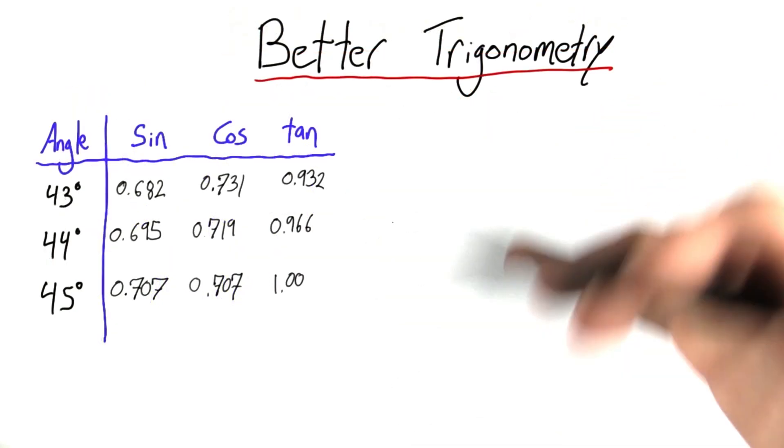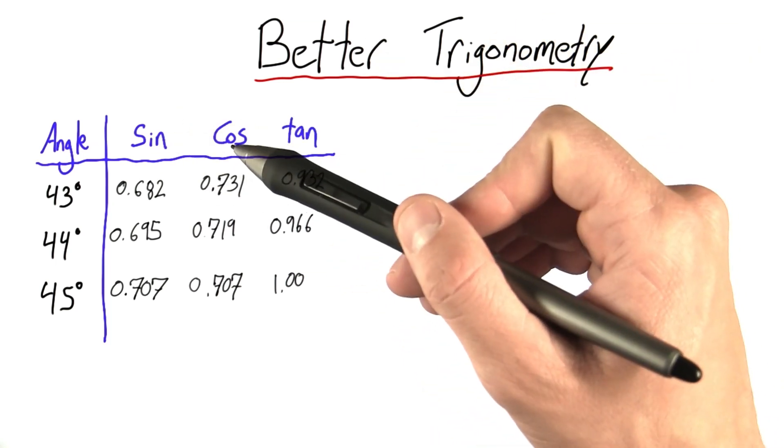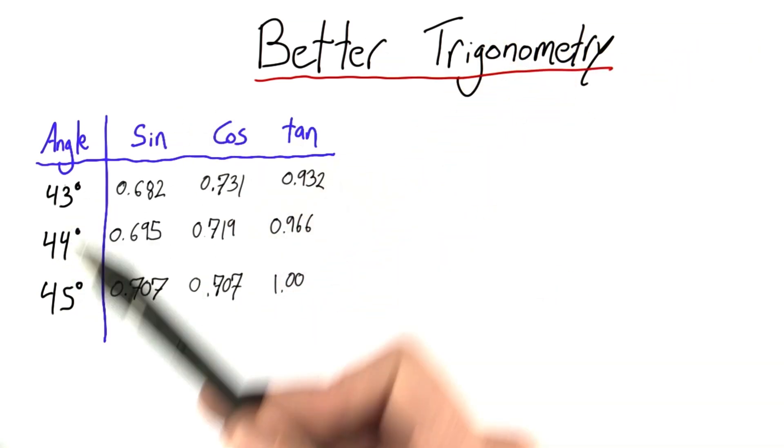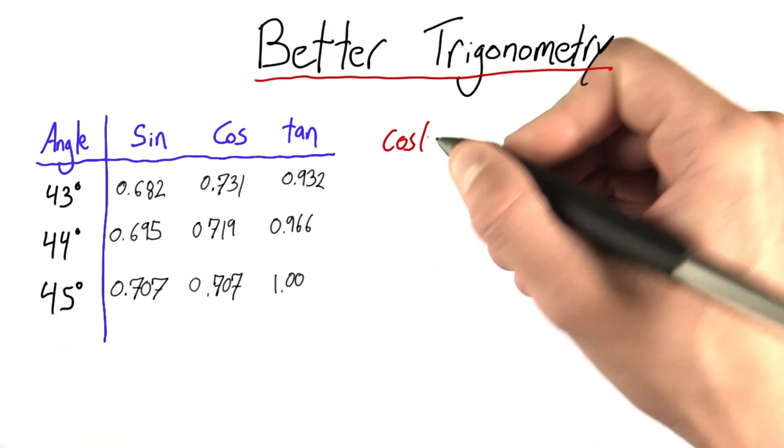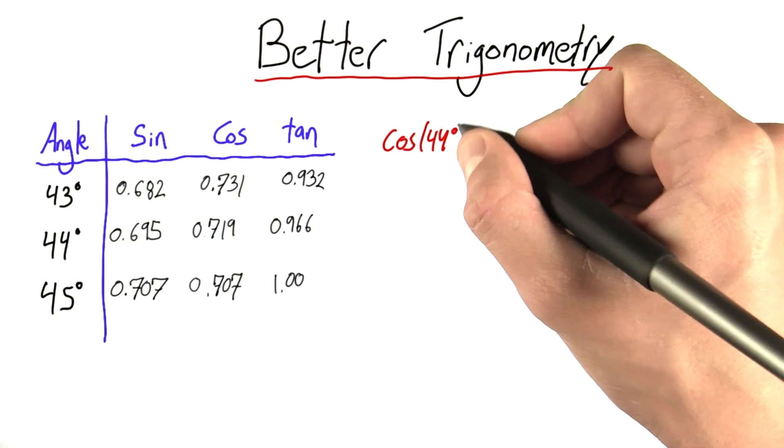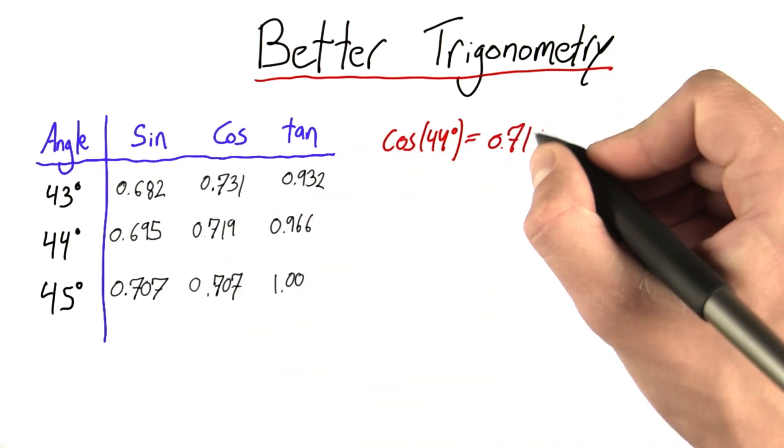So far, the way we've been doing trigonometry is, let's say we wanted to calculate the cosine of 44 degrees. We'd find our angle in our trig table, and we could read off that the cosine of 44 degrees equals 0.719.